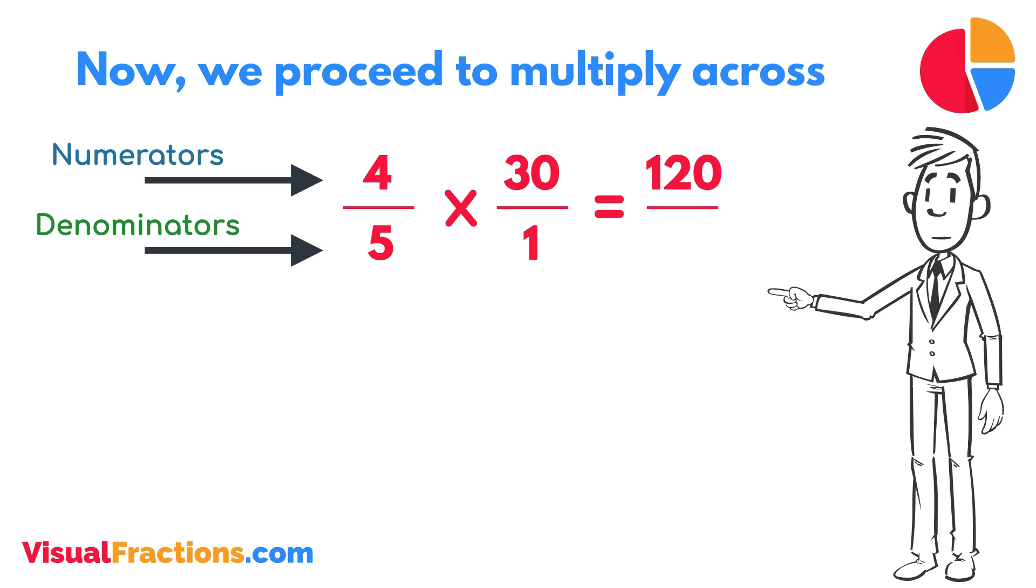Next, multiply the denominators. 1 times 5 equals 5. We now have a new fraction, 120 fifths.